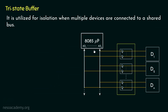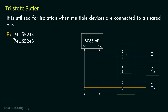With the 8085 microprocessor, two different types of tri-state buffers are used: 74LS244 and 74LS245. The 74LS244 is a unidirectional tri-state buffer, whereas the 74LS245 is a bidirectional tri-state buffer.